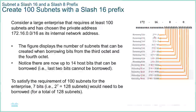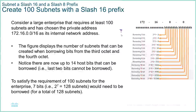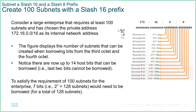If we borrow one bit we get two options; borrow two bits we get four options — zero-zero, zero-one, one-zero, and one-one. If you borrow another bit, you get double the options again. It doesn't matter where you start from in the network — you can divide any existing network into smaller portions.